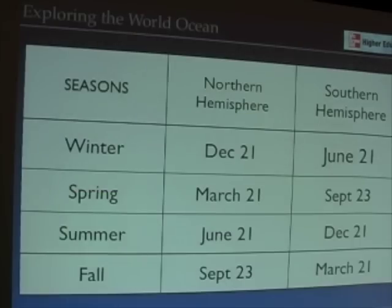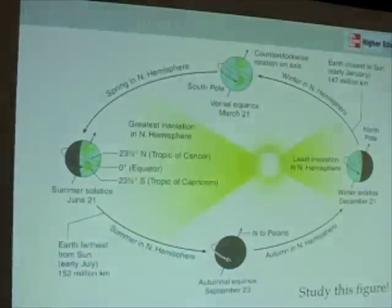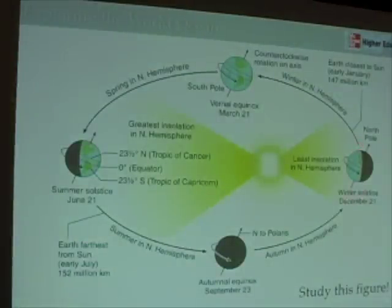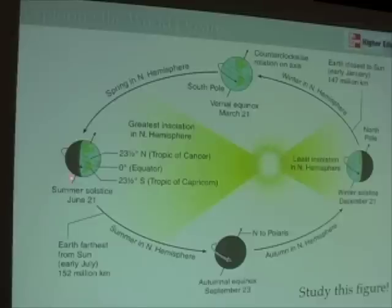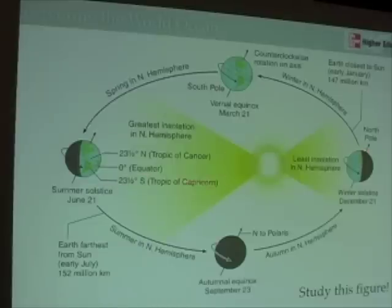In fact, at the winter solstice, anywhere above the Arctic Circle gets plunged into six months of darkness. And the opposite is true during our summer — Antarctica is completely dark for six months, because the tilt of the earth prevents any sunlight from reaching that region at the respective solstices.